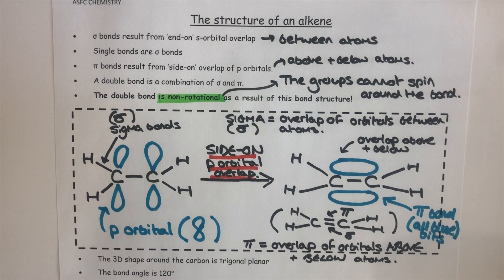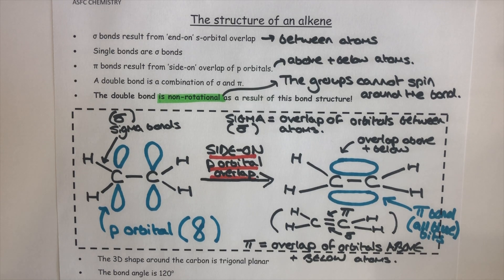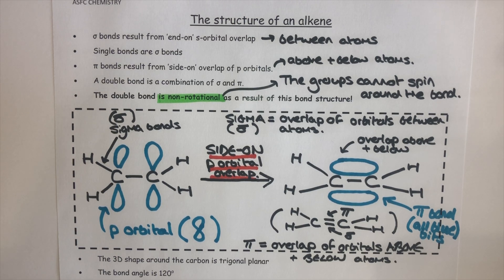Welcome to the online lecture for alkenes part one. An alkene is another example of a homologous series that we study in organic chemistry, and when we start talking about the bonding in an alkene we jump straight to the carbon-carbon double bond, which is the functional group associated with that homologous series. For A-level we need to know a little more about what is actually in that double bond between the two carbon atoms.